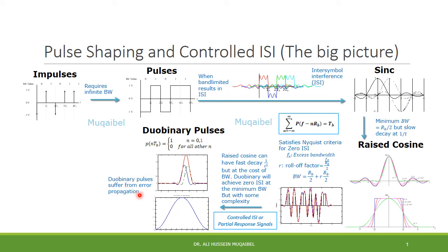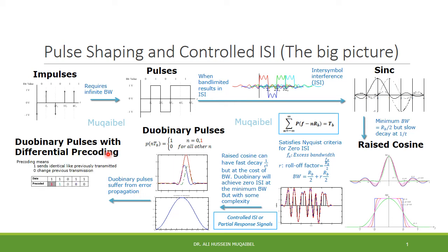Dual binary will still suffer from error propagation. To solve this, we use dual binary pulses with differential pre-coding — we pre-code the data before encoding with dual binary. For example, if we have a data bit of 1, we send an identical bit to the previous one; if we have a 0, we change from the previous transmission. At the receiver side, similar decoding is applied and there is no error propagation, though the cost is the added complexity of pre-coding.